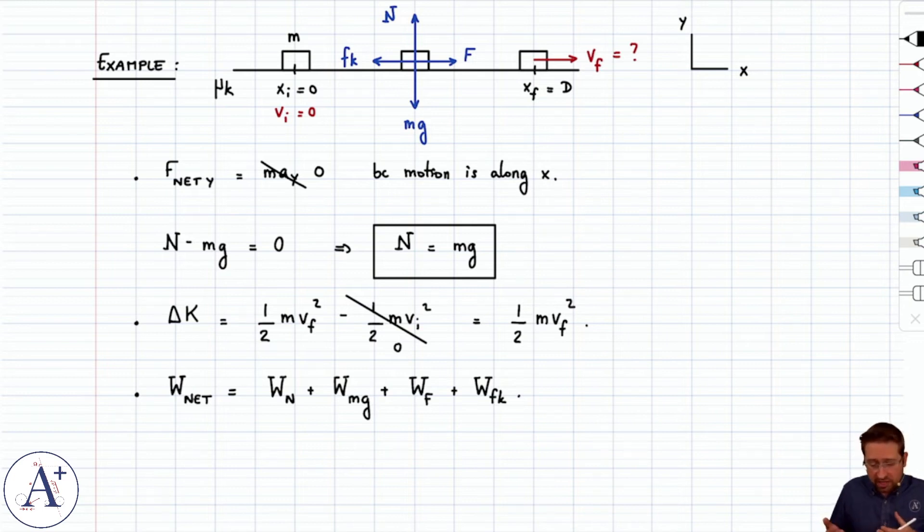Some may be positive, some may be negative. We'll find out, and we'll add them all together. All right, let's start with the easy ones. Work done by the normal force is zero. Work done by mg is zero. So both forces are perpendicular to the displacement of the mass from left to right. Therefore, they contribute zero work. So they're out of there.